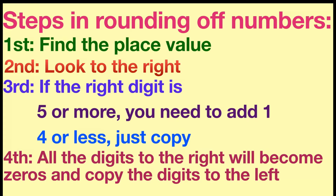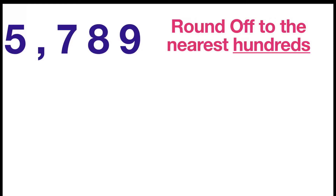That is the steps in rounding of numbers. Let's have our first example: 5,789 round off to the nearest hundreds.